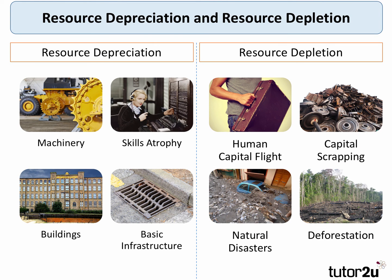It's important to think about situations when a country's PPF can shift inwards — it doesn't necessarily have to move outwards all the time. Two key things to think about are resource depreciation and resource depletion. Resource depreciation is when machinery is used extensively and depreciates in value due to wear and tear, and buildings and core infrastructure depreciate as the demands upon them increase.